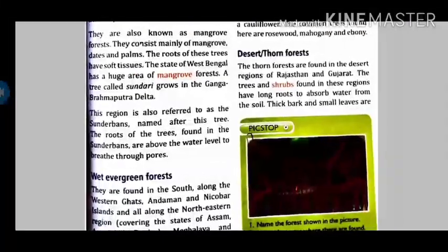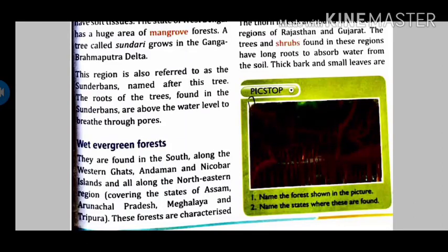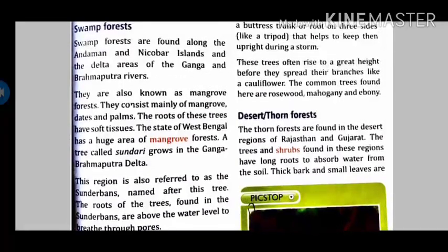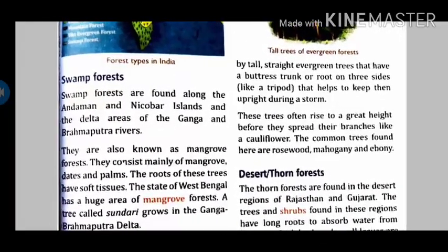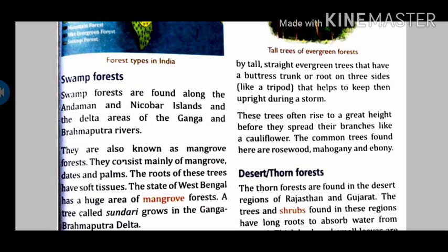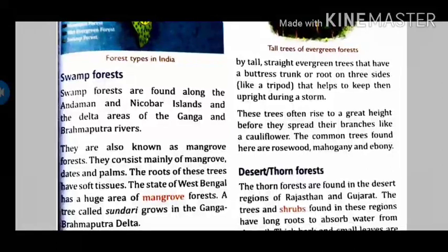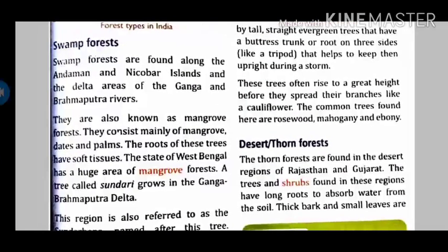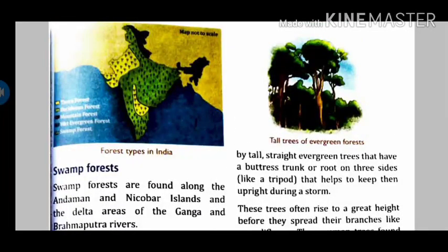Next we have wet evergreen forest. These are found in the Western Ghats, Andaman and Nicobar Islands, and the northeastern part of the Himalayas — that is Assam, Arunachal Pradesh, Meghalaya, and Tripura. These regions contain tropical evergreen forest. Evergreen means they do not shed their leaves together in the dry season, and there is enough rainfall to grow them properly. Trees generally have tripod-like trunks, and trees found here are rosewood, mahogany, and ebony. Their upper surface looks like a cauliflower.